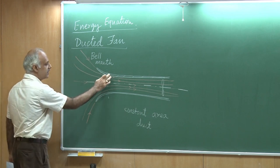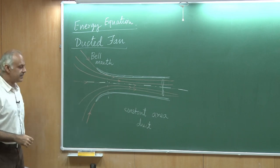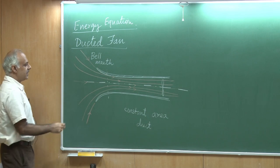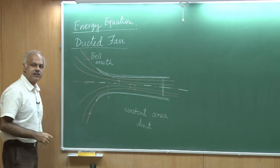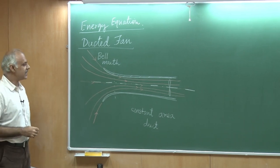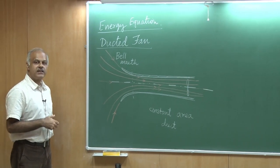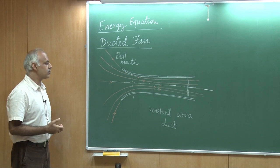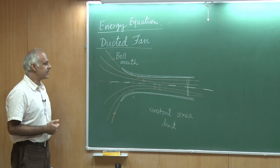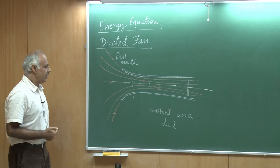If the bell mouth is not there, if it is just a straight duct, then you can imagine that the flow would separate here. That could lead to some losses, and we want to avoid that because we are interested in looking at the ideal flow.